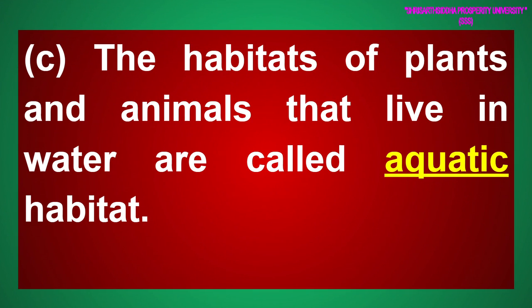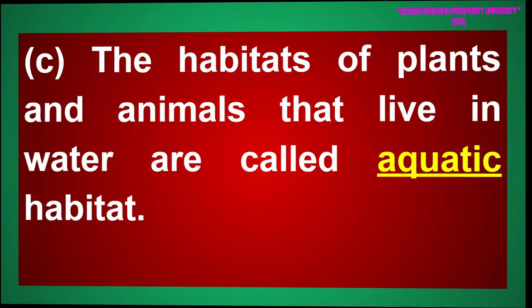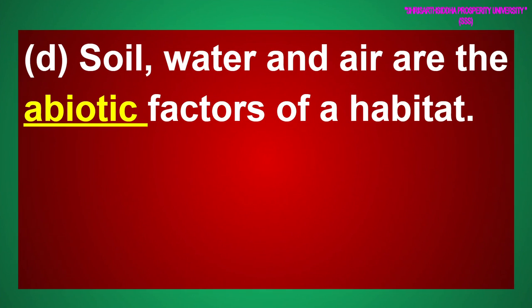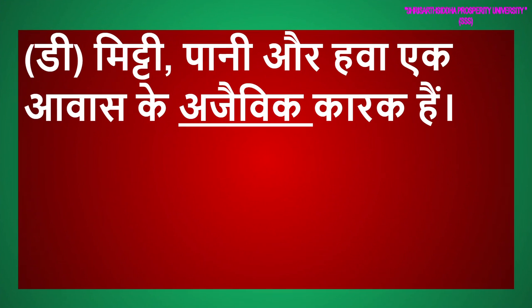The habitats of plants and animals that live in water are called aquatic habitat. जल में रहने वाले पौधों और जानवरों के आवास जलीय आवास कहलाते हैं। Soil, water and air are the abiotic factors of a habitat. मिट्टी, पानी और हवा एक आवास के अजैविक कारक हैं।